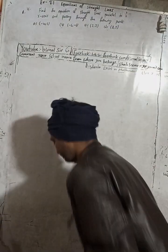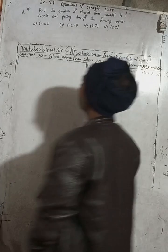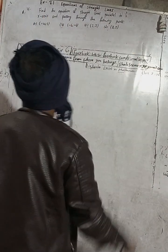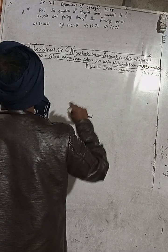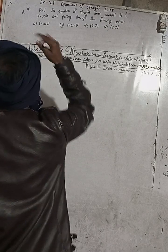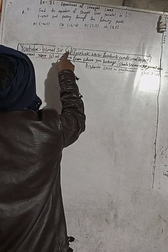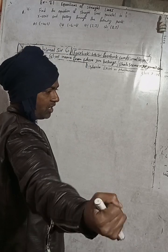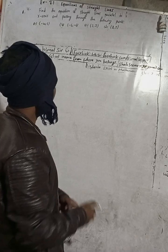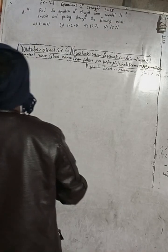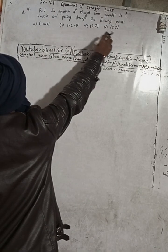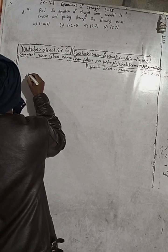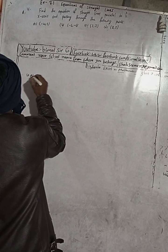Here the question is number 4 of Exercise 7.1 — equations of straight lines — from NCERT Mathematics class 9. In this Vimal Surge's playlist you will get a lot of solutions, and if you don't find one, comment so I can help. The question asks: find the equation of straight lines parallel to the x-axis and passing through the following points.